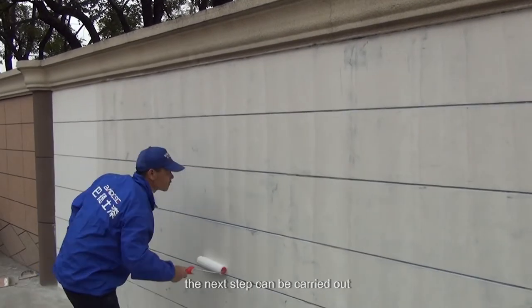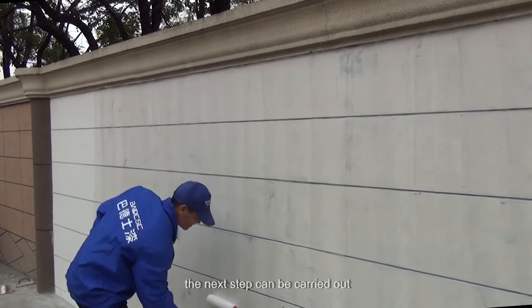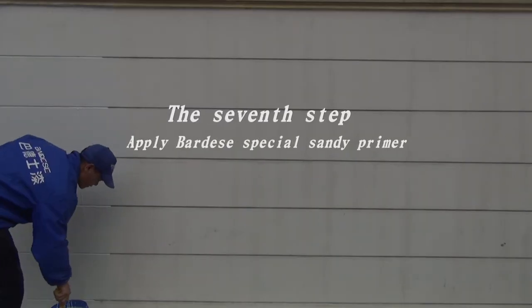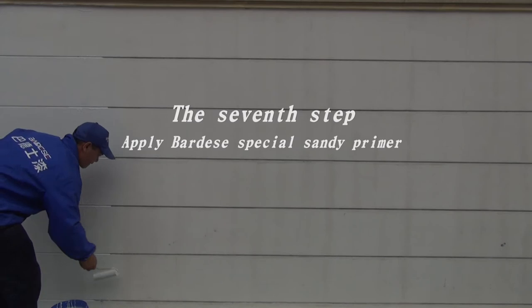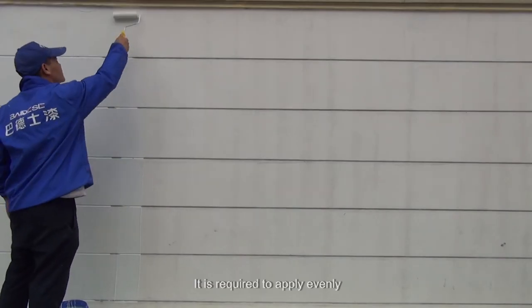The seventh step: apply Bardese's special sandy primer. It is required to apply evenly and fully by roller or spray gun without sagging.